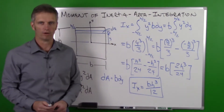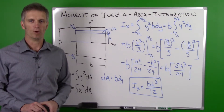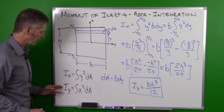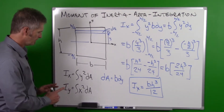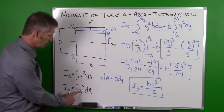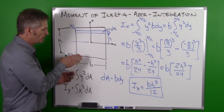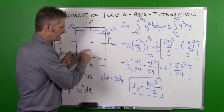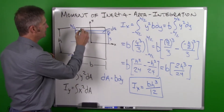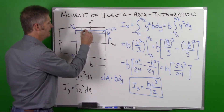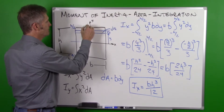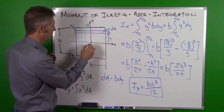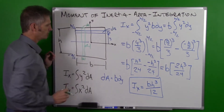That is our answer for the moment of inertia about the x-axis for a rectangular cross-section: Ix = bh³/12. Now let me point out how we set this up for Iy. When we calculate Iy we're looking at an x distance, so our dA is now going to be vertical. It has a width of dx and a distance x to our dA.